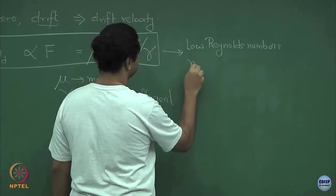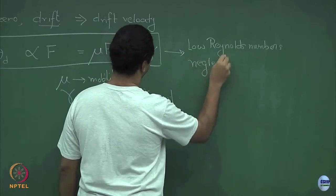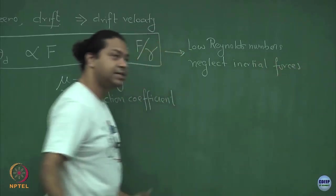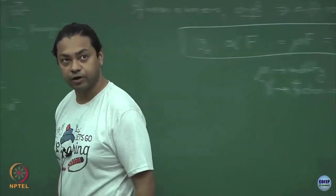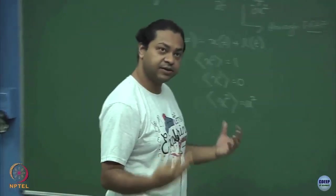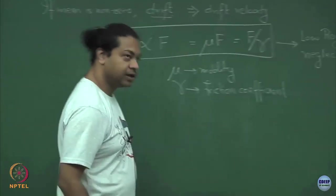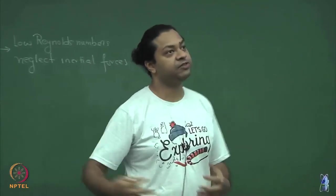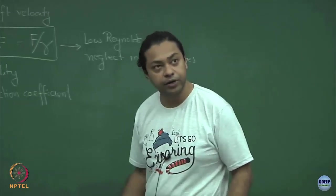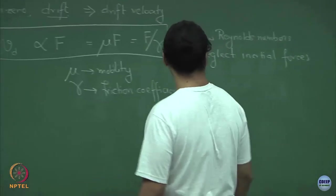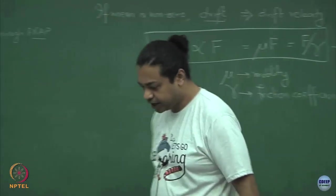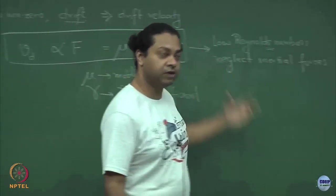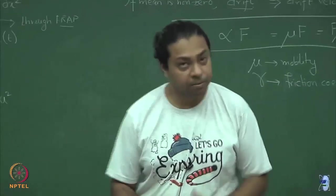This happens when you can neglect inertial forces — so the acceleration term is not important in Newton's laws. Generally, that is the regime in which biological systems operate. We will calculate how to quantify the biological medium in which these proteins and organisms are undergoing random walks, and that characterization happens via this quantity called the Reynolds number. We will see in what sort of regimes this approximation — that the velocity is proportional to the force — is valid.